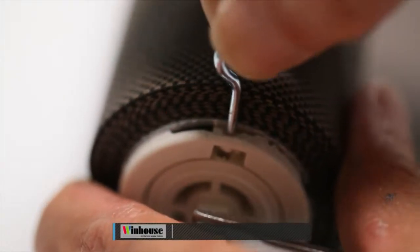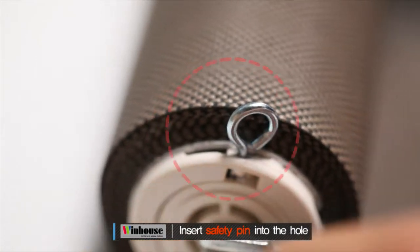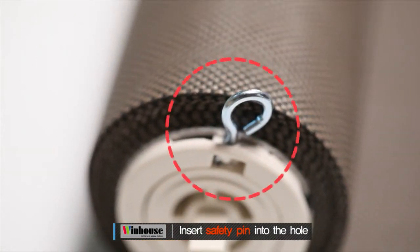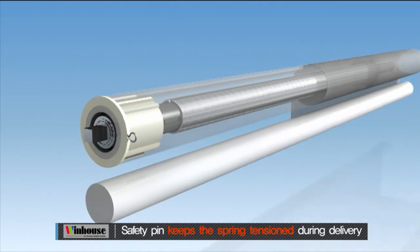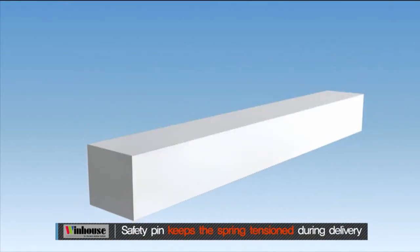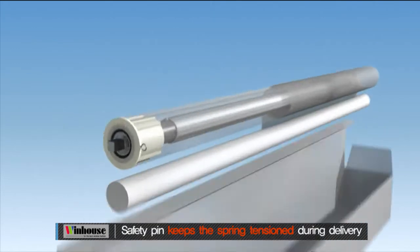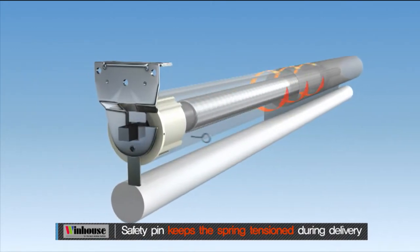After applying tension, insert the safety pin. This safety pin keeps the spring tension in place during delivery, allowing you to fabricate completely at the factory and the installer to install the shade with ease.